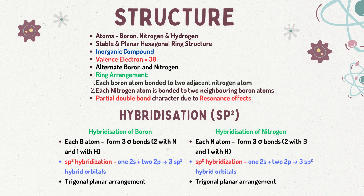Thus, both boron and nitrogen undergo sp2 hybridization. In sp2 hybridization, one 2s orbital and two 2p orbitals combine to form three new hybrid orbitals. Also, because of sp2 hybridization, both have trigonal planar geometry.